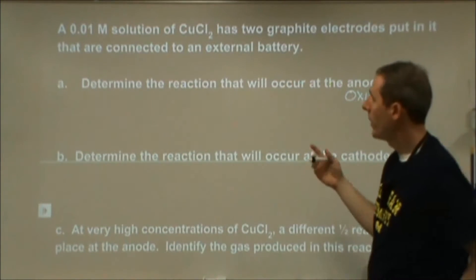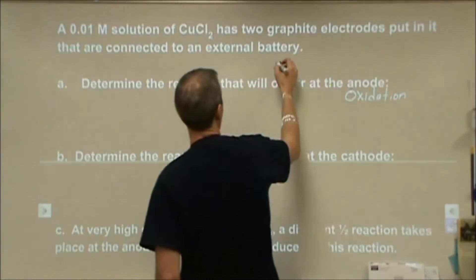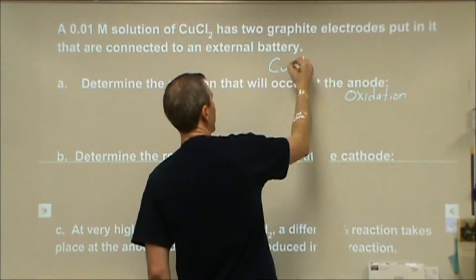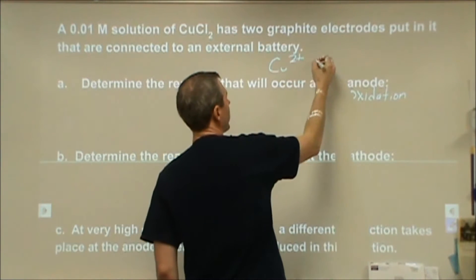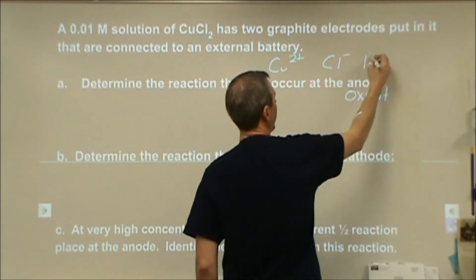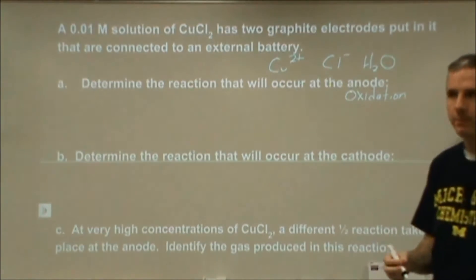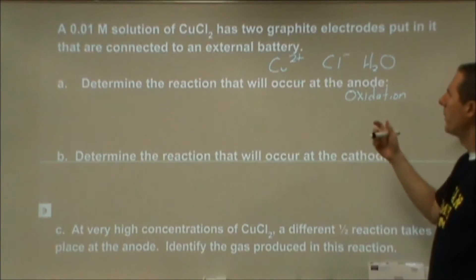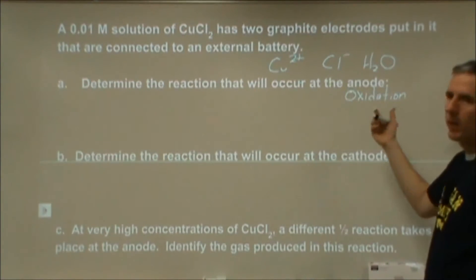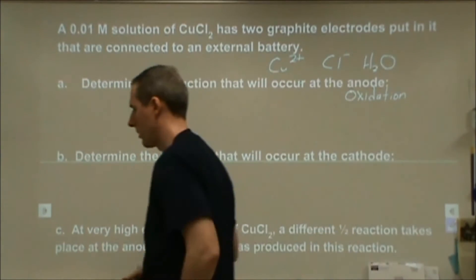We want to look at what we have available. In our solution we have three things: we have copper 2-plus ions, we have chloride ions, and we have water. We want to figure out what could be oxidized of those three things, and what the oxidation reactions would look like.